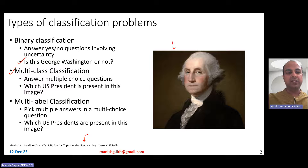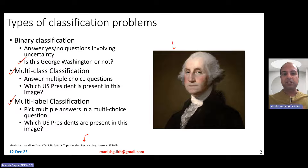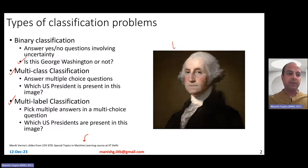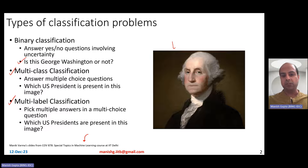Then there are multi-label classification problems, where there are multiple choices and you have to pick up multiple answers from those choices. For example, if I give you a movie name, there are several choices in terms of genre. Movies belong to several categories like comedy, thriller, romance, sci-fi, and so on. If I give you a particular movie name and ask which genre it belongs to, the movie could belong to multiple possible genres. That's called multi-label classification.